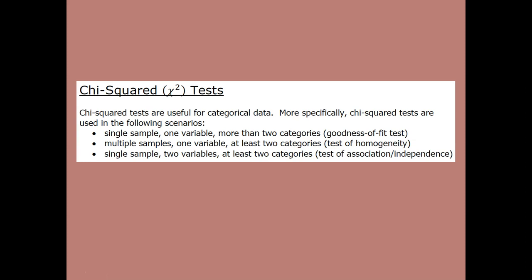We already have one way of dealing with categorical data, which is to use proportions. However, there are some restrictions. Think about the way that you compute a sample proportion — for each individual in the sample, either the outcome of interest happens or it doesn't. That's two categories. If you have more than two categories, you're going to need something else, and that's where a chi-squared test comes in.